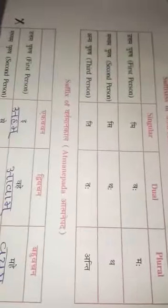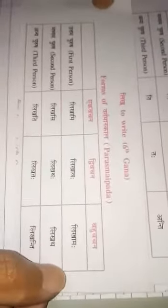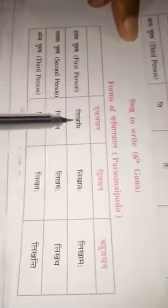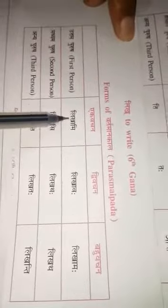On the basis of this pratyay, we make verb forms. For example, here the root form is likh. So using this pratyay, we have made the verbs likhami, likhavah, likhamah, likhasi, likhatah, likhantah, likhati, likhatah, likhanti.